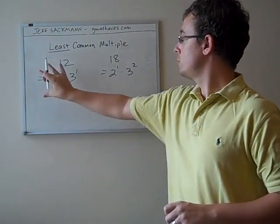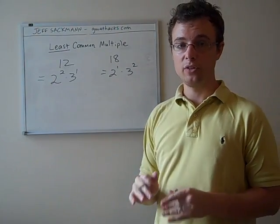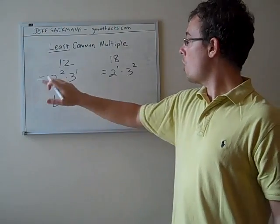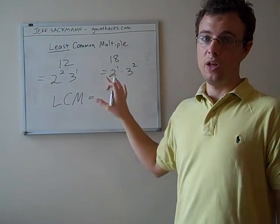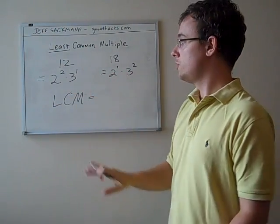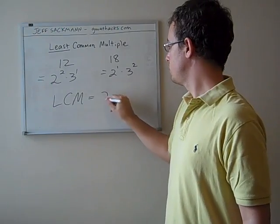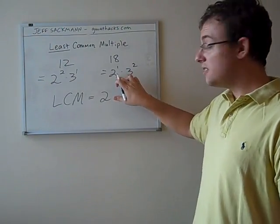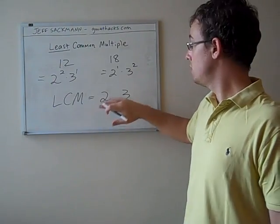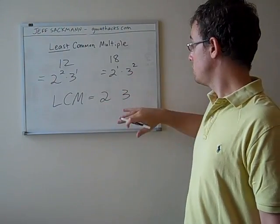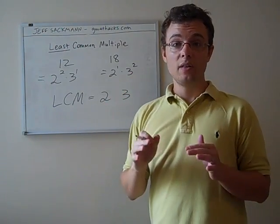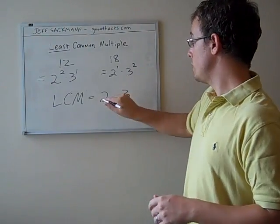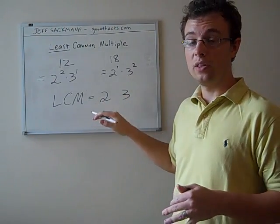So to find the least common multiple, we start by getting the prime factorizations. Then the least common multiple will consist of all the prime factors that are present in either number. So 12 has some 2s, and it has some 3s. 18 has some 2s, which are already represented, and 18 has some 3s, which are already represented. The complicated step here is picking the exponent. So we know there's at least one 2 in the least common multiple.